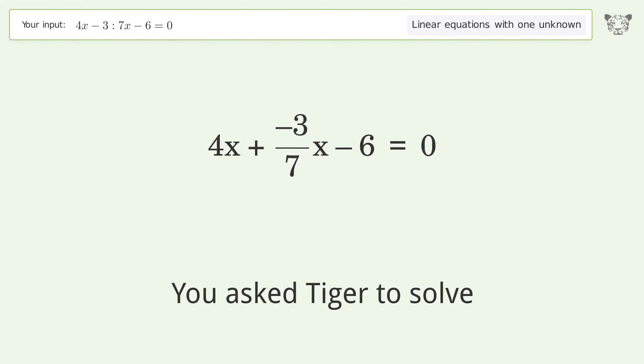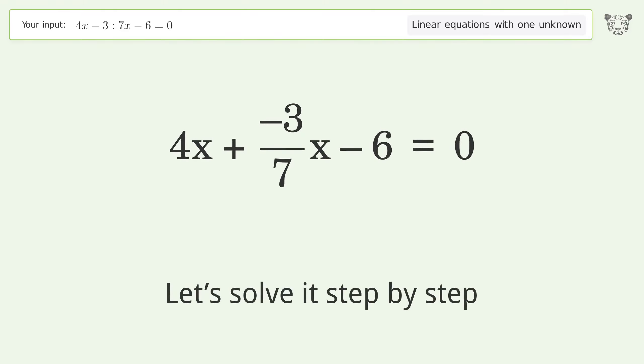You ask Tiger to solve this. This deals with linear equations with one unknown. The final result is x equals 42 over 25. Let's solve it step by step. Simplify the expression. Group the coefficients.